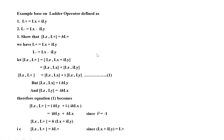Today we see examples based on ladder operators. L plus is defined as LX plus iLY, and L minus is equal to LX minus iLY, where L plus is known as the rising operator and L minus is called the lowering operator. Collectively, the combination of L plus and L minus is known as a ladder operator. Let us see some examples based on ladder operators.